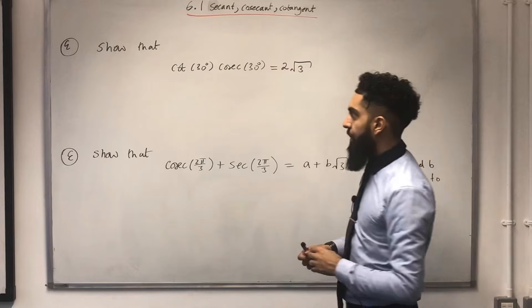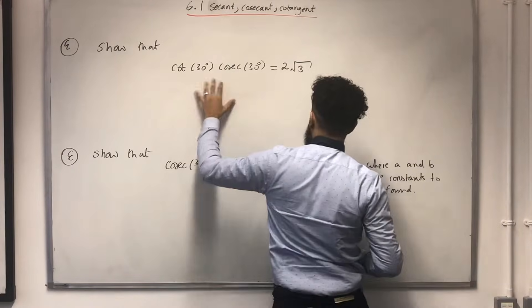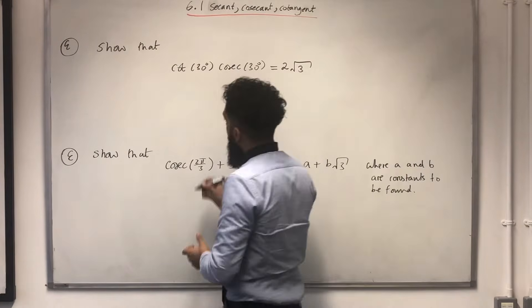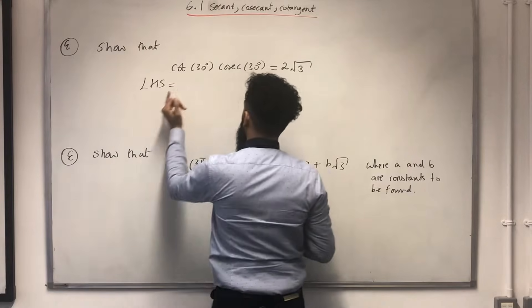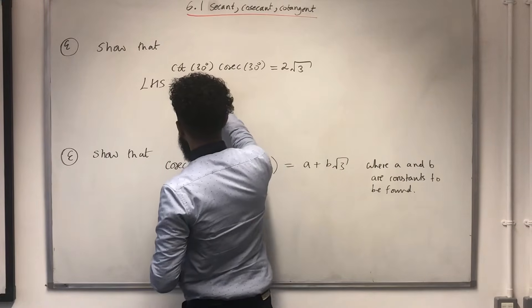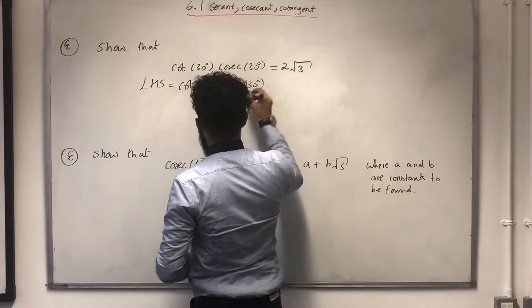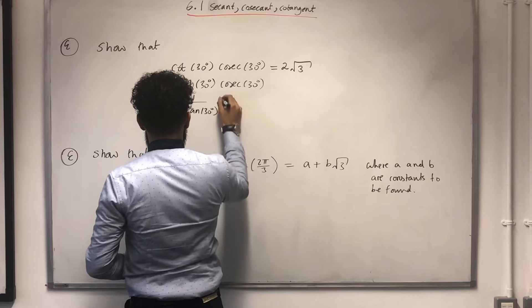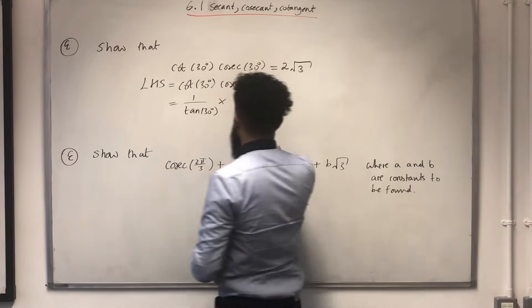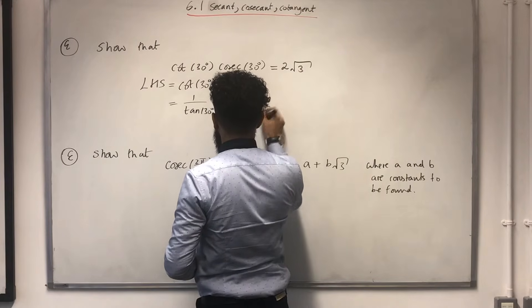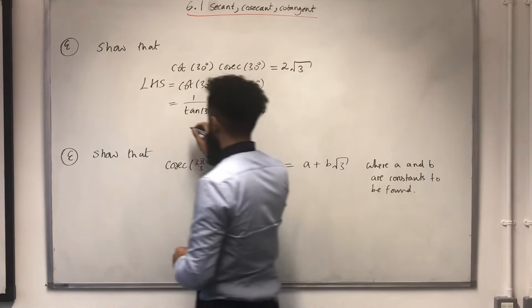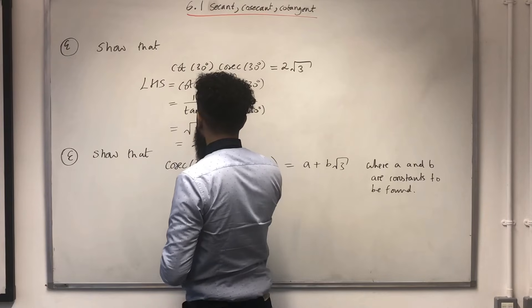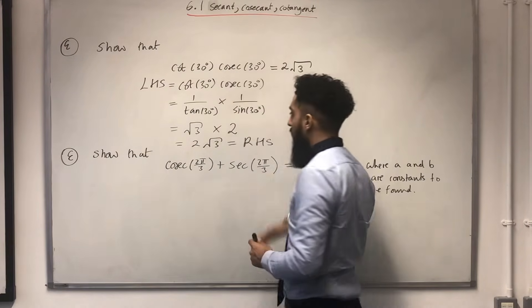Let's have a look at the first exam question. What I can observe from the first exam question is that the angle is in degree mode. Therefore, I must put my calculator in degree mode. Let's tackle this problem. The very first step is to write down LHS, left-hand side, which is this one over here, cot 30° multiplied by cosec 30°. Now, cot 30° is 1 over tan 30° multiplied by cosec 30° is 1 over sin 30°. Now, I know that 1 over tan 30° is √3 multiplied by 1 over sin 30° is 2. So, I get 2√3, which is precisely the right-hand side. There you go. That completes the question.